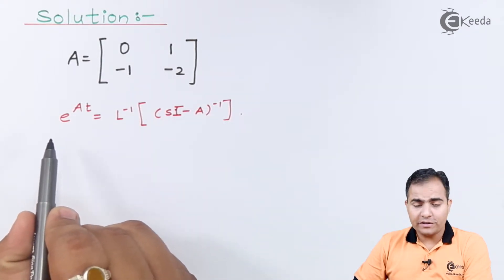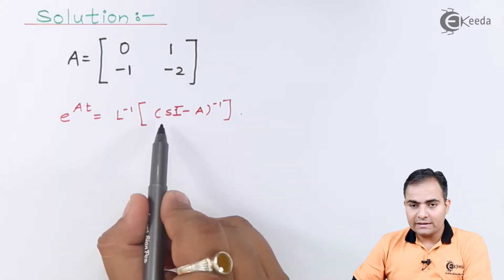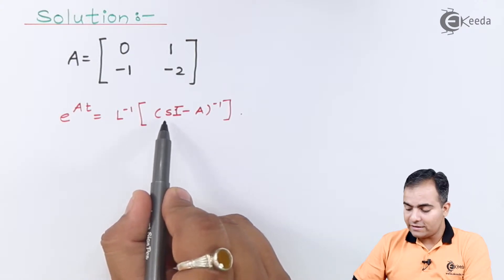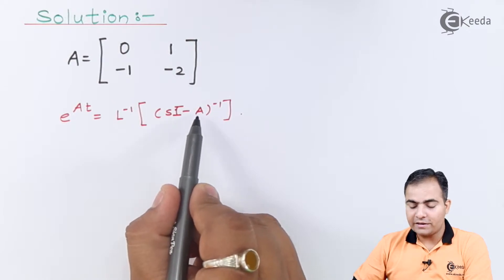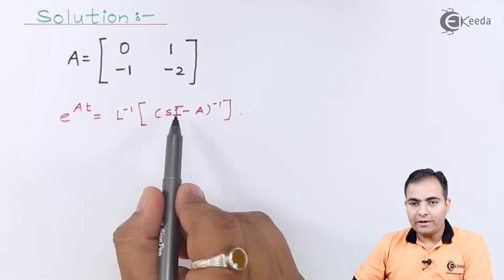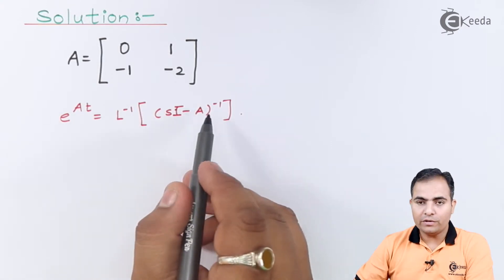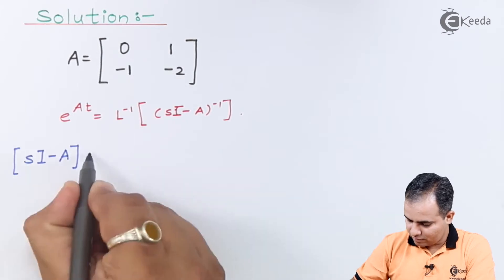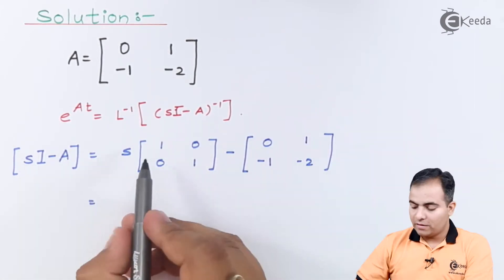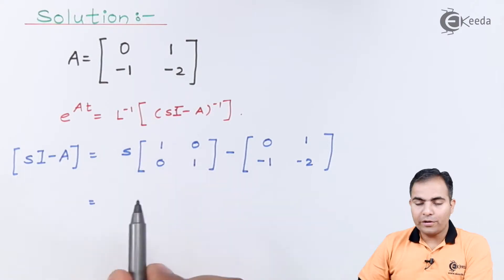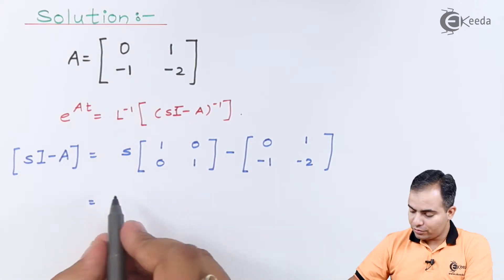To find the state transition matrix, take the Laplace inverse of (sI - A)⁻¹, where s·I means s is multiplied with the unity matrix, and the state matrix A is subtracted from the s·I product matrix. First, we'll compute s·I by multiplying s with the identity matrix: s×1 = s and s×0 = 0.